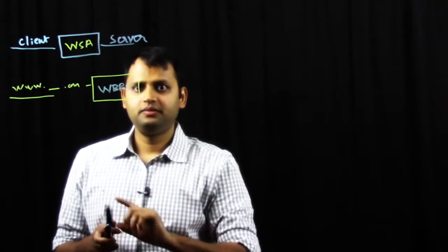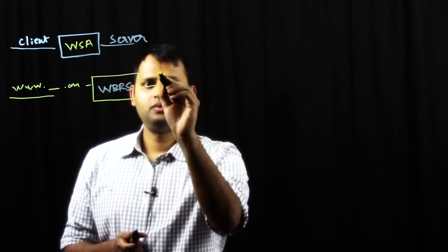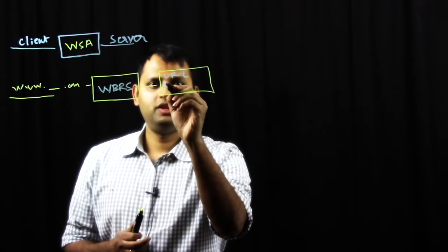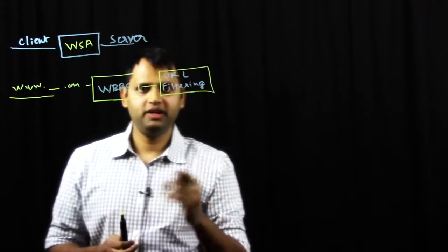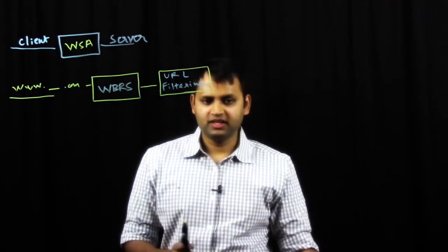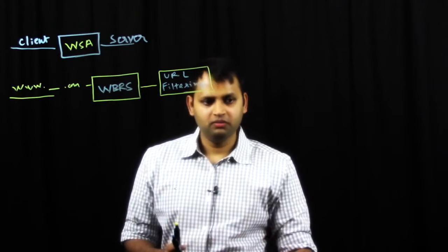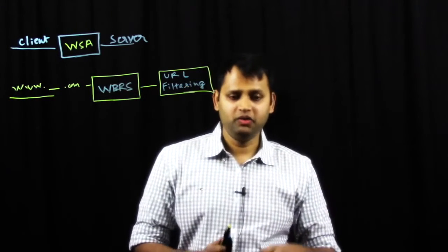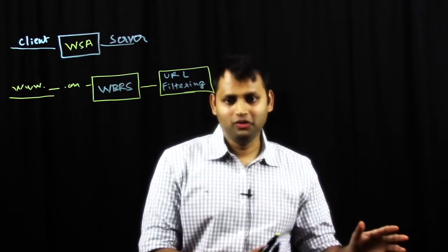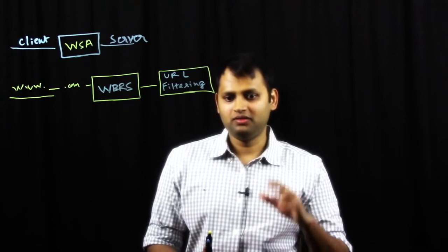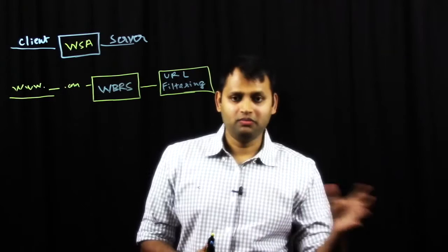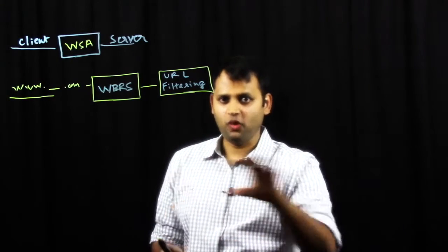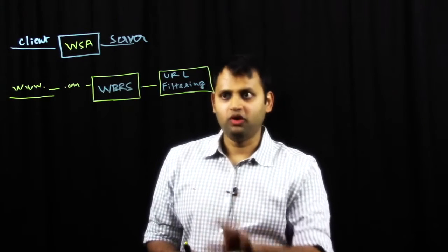So the next filter in line is URL filtering, and here, based on the policy set by the admin, you can either block complete sections of internet like pornography, adult, extreme, violence, gambling, things that are basically unproductive. And these are huge vectors, by the way, for threats to come in, like pornography. If you go on a pornography website, there's tons of pop-ups that could have malware in there, and it's just a nice little honey trap for your machines to get infected. So just blocking at this level, although this comes under acceptable use policy, just blocking certain sections of the internet could very well block certain threats.